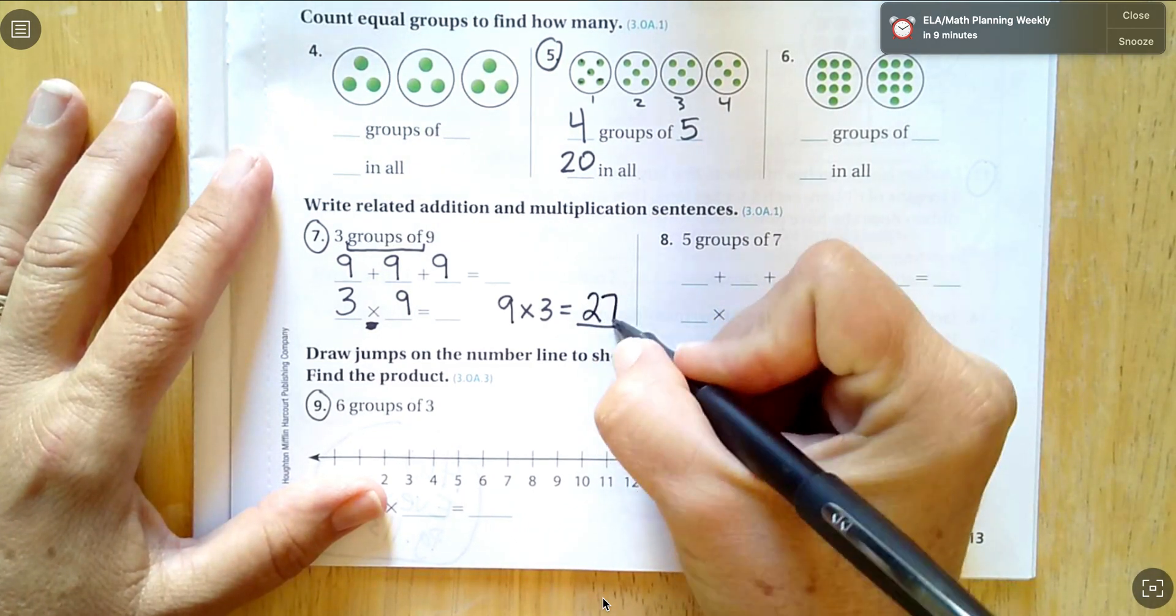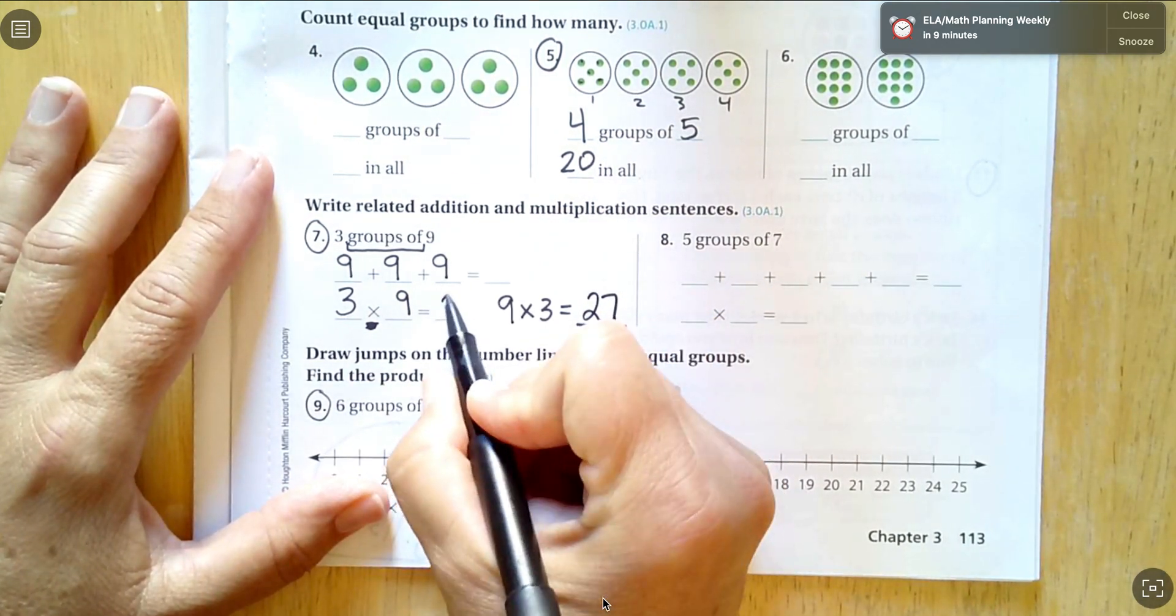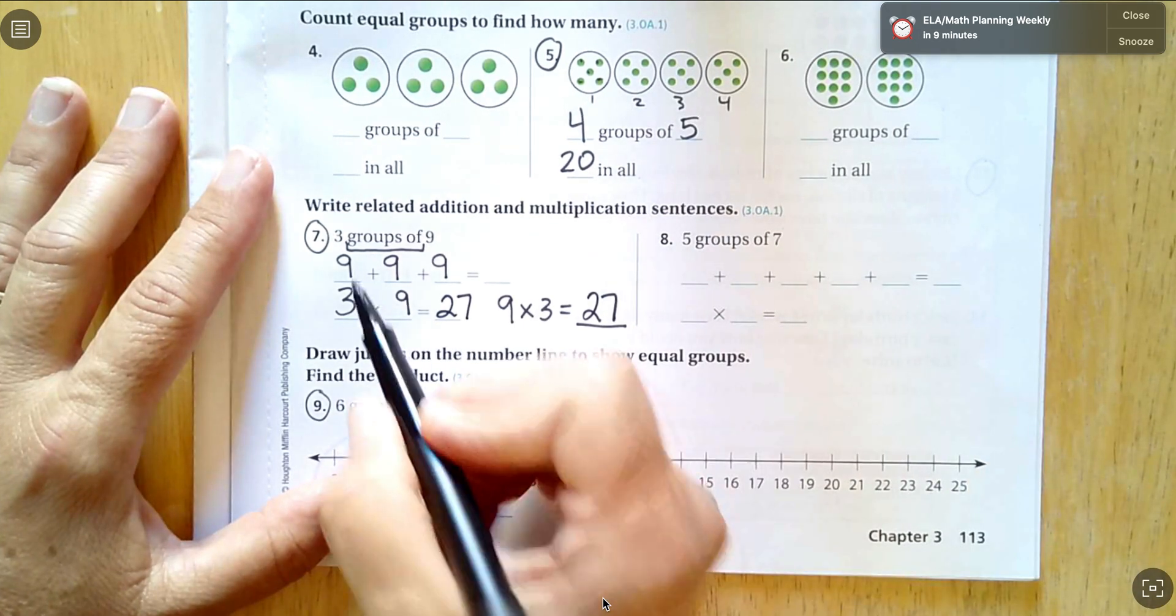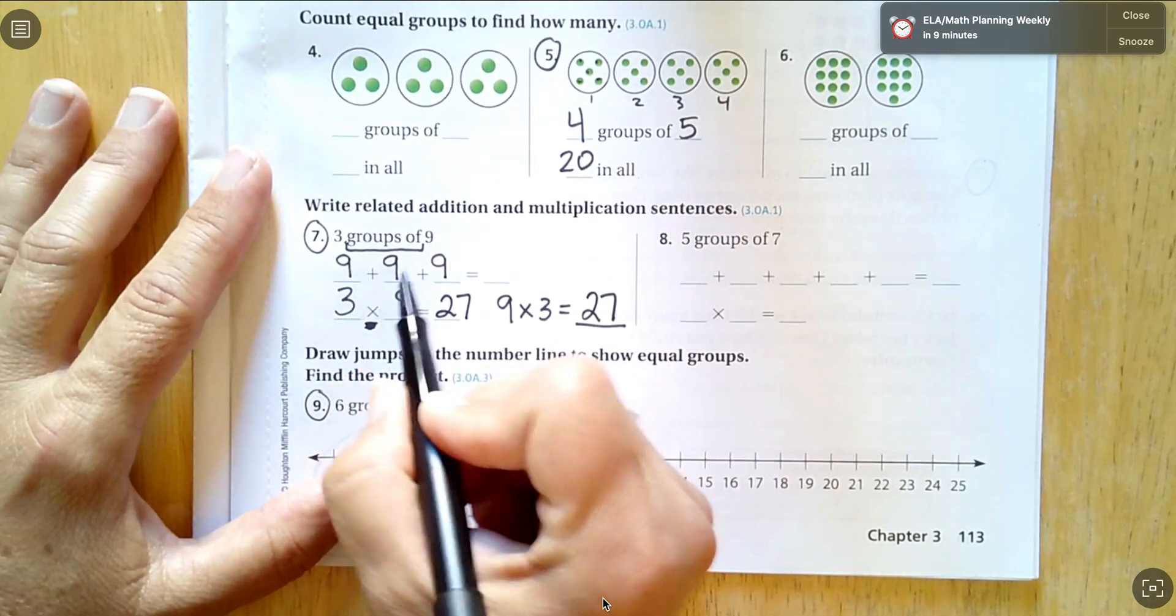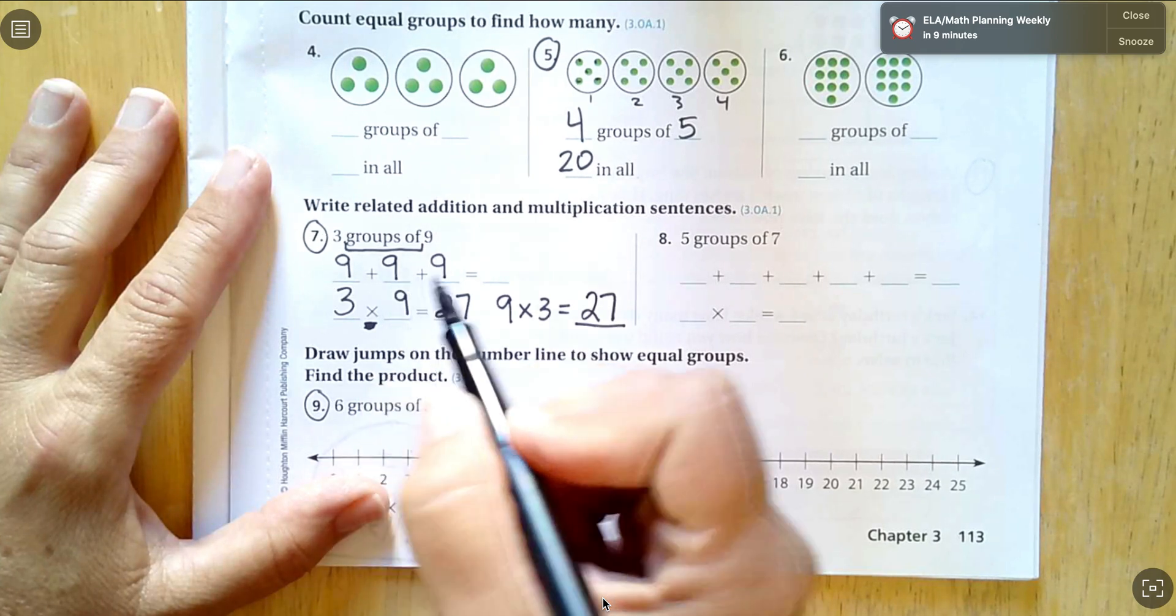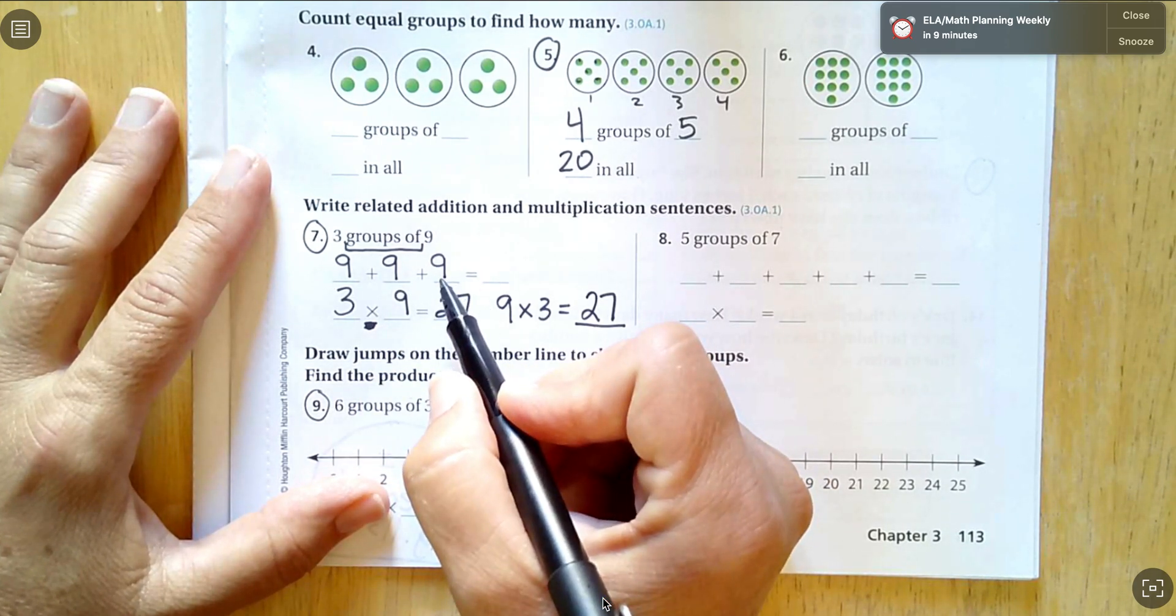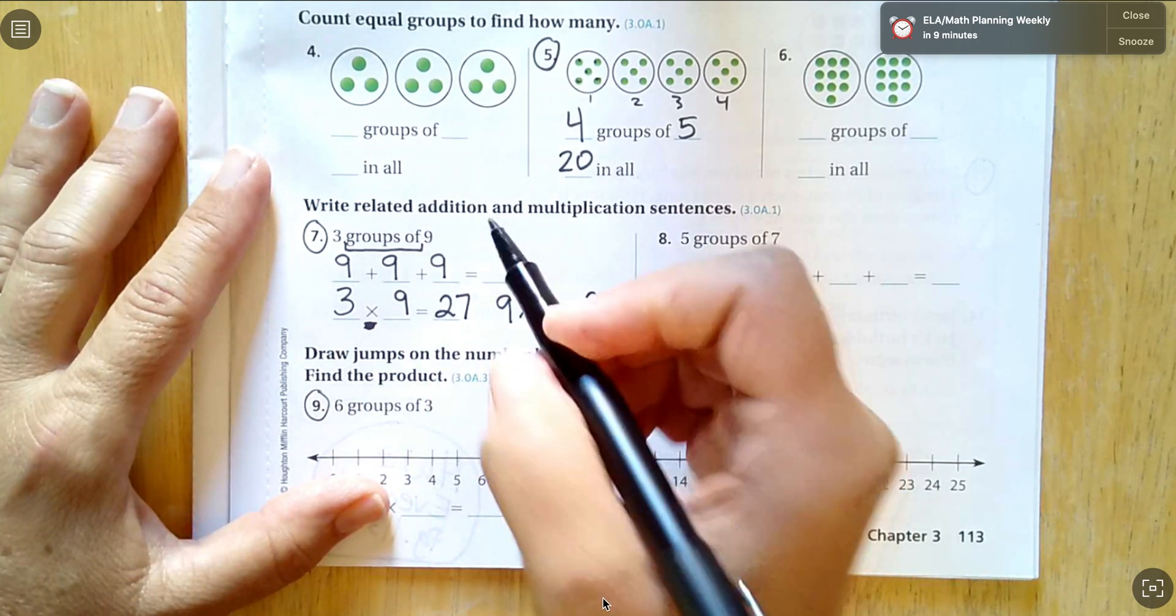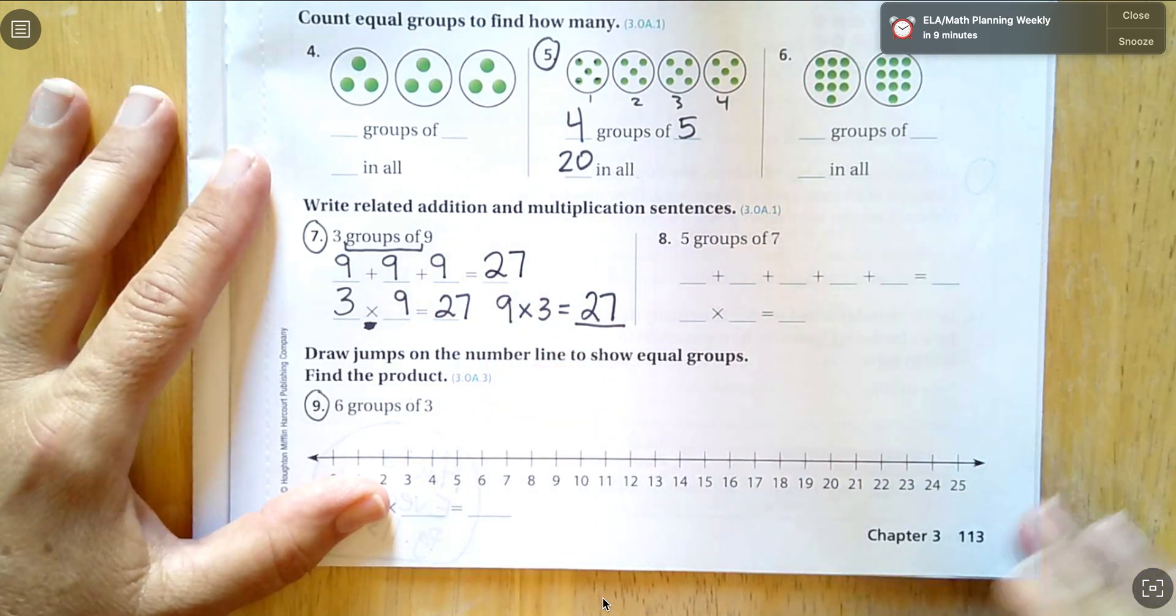So if nine times three is 27, three times nine is 27. Or I could do the repeated addition. Nine plus nine is 18. 18 plus nine more. It's almost 10, which would be 28, but it's one less. So it's 27.